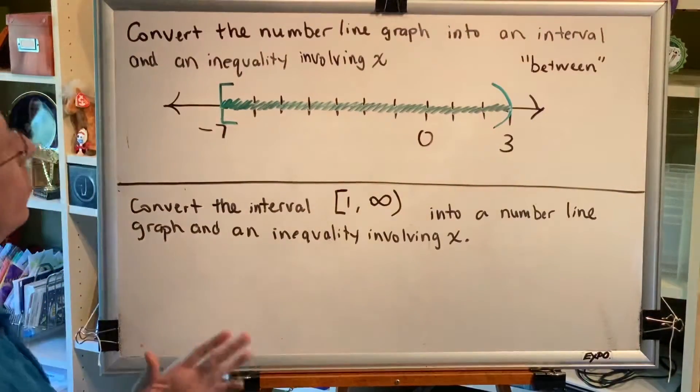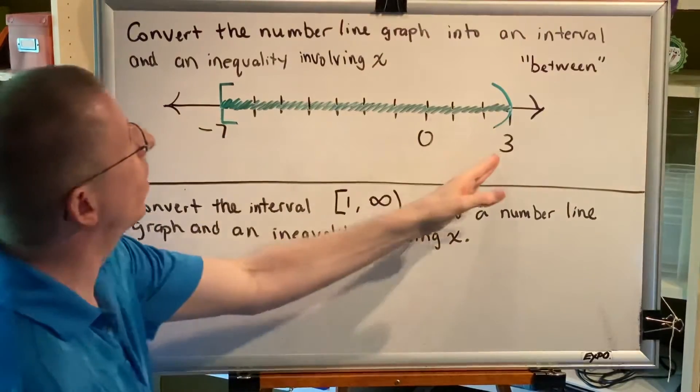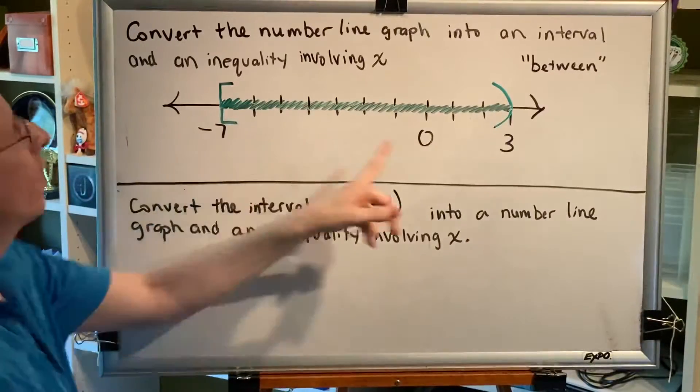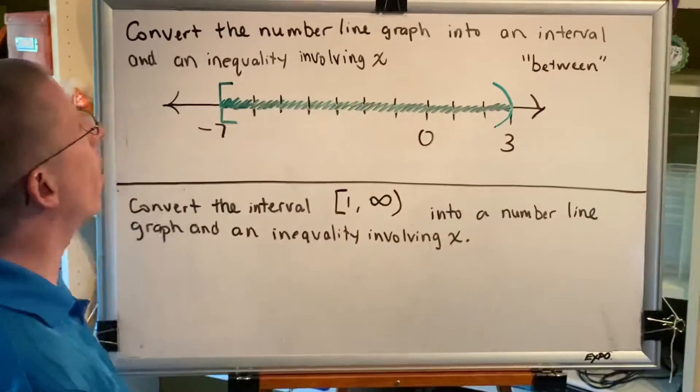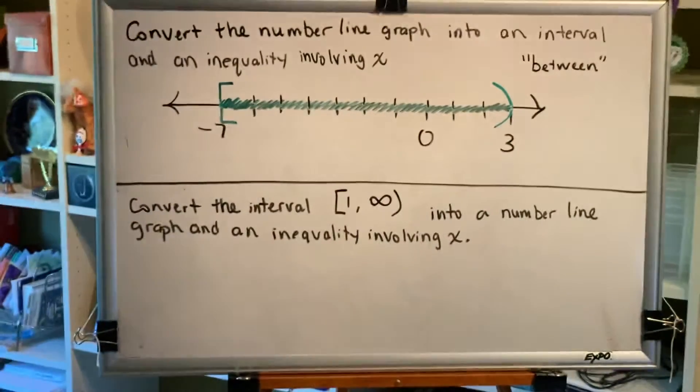It says we want all of the numbers between negative seven and positive three, including negative seven, but excluding positive three. Let's go ahead and write our interval first.